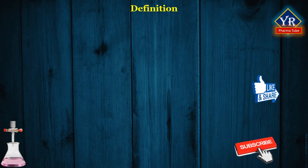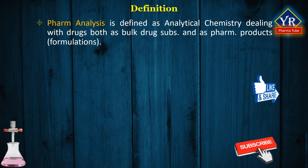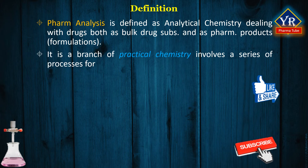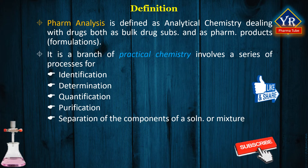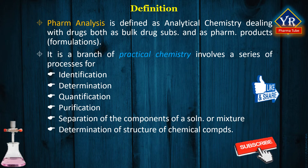Definition of pharmaceutical analysis. Pharmaceutical analysis is traditionally defined as analytical chemistry dealing with drugs, both as bulk drug substances and as pharmaceutical products, i.e., pharmaceutical formulations. It is a branch of practical chemistry that involves a series of processes for identification, determination, quantification, and purification of a substance, separation of the components of a solution or mixture, or determination of the structure of chemical compounds.